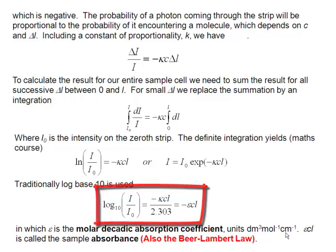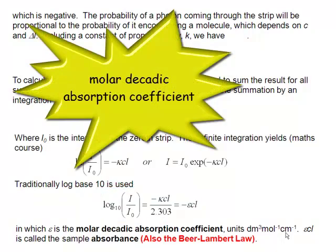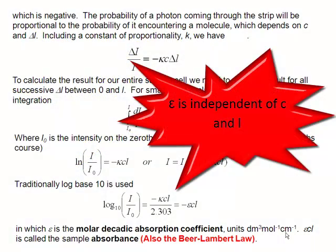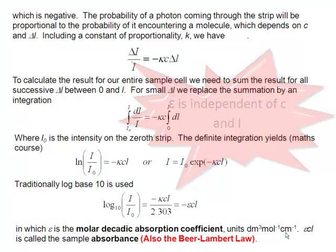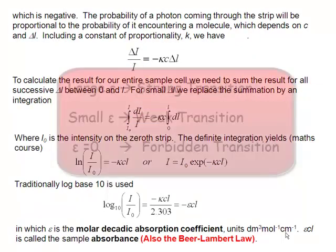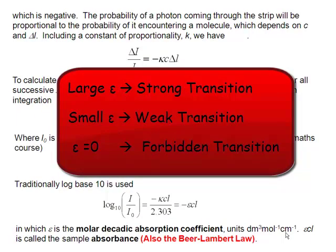Epsilon is what we call the molar decadic absorption coefficient. And it's a function of the molecule. So it's independent of the concentration or the length of the sample. It tells us about the propensity of the molecule to absorb light. If epsilon is a large number, then that's a strong transition. If it's a small number, then it's a weak transition.